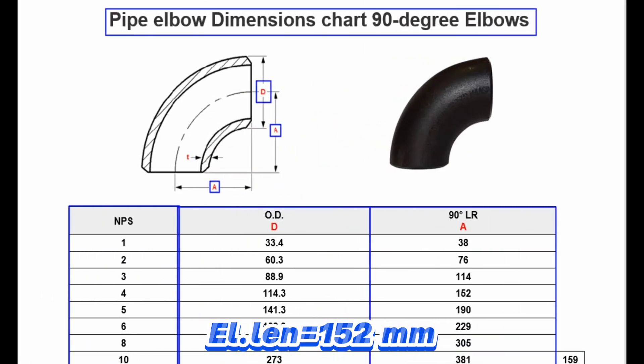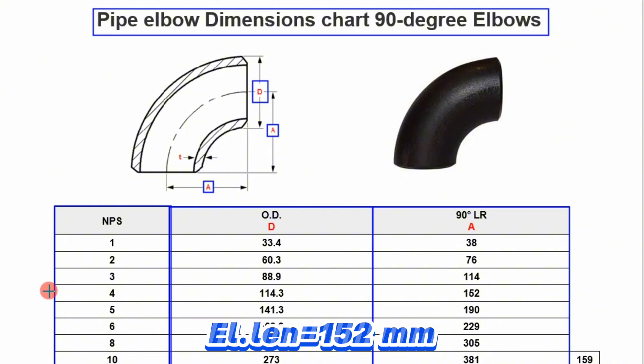Now we will look at the pipe elbow dimensions chart. We will look at the row where the nominal pipe size is 4. The outside diameter of the nominal pipe size 4 elbow is 114.3 millimeters and the center to end dimension or radius is 152 millimeters.